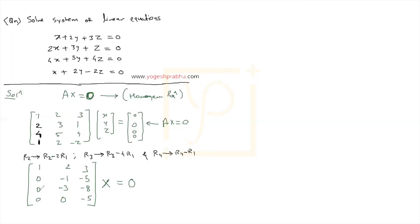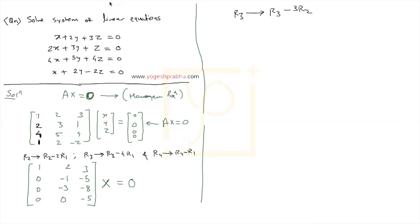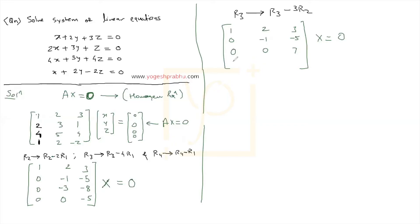Now we want to make the element below the second pivot zero. The next operation is R3 becomes R3 minus 3·R2. After the first set of operations, the second row is 0, minus 1, minus 5. Multiplying R2 by minus 3 and adding to R3: the first element stays 0, then 3 plus minus 3 gives 0, and 15 plus minus 8 gives 7. The fourth row 0, 0, minus 5 is kept as is.